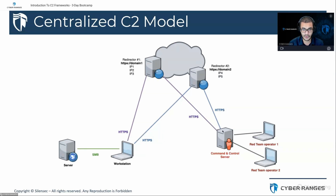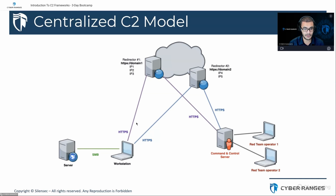In this basic representation you can have many redirectors and proxies. The C2 server is configured to communicate with a redirector, which is then configured to communicate with a set of agents. Instead of having the target system call back directly to the C2 server, the C2 server is isolated so that anyone monitoring egress traffic in the organization would only see connections to the redirector or proxy IP — not the actual C2 server's address.